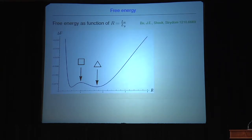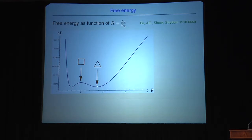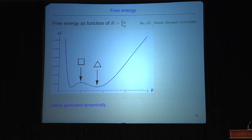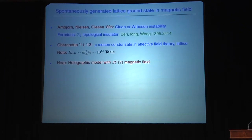We can show that the triangular lattice is the most stable one by calculating the free energy as a function of the ratio between the lattice sides. The quadratic lattice and the triangular lattice (dual to a hexagonal lattice) are compared, and we see that the triangular lattice is the most stable one. This is intrinsically interesting because we can compare these gauge-gravity calculations to the QCD result, and the lattice is generated dynamically — it is not put in by hand, it really is a result of the calculation.